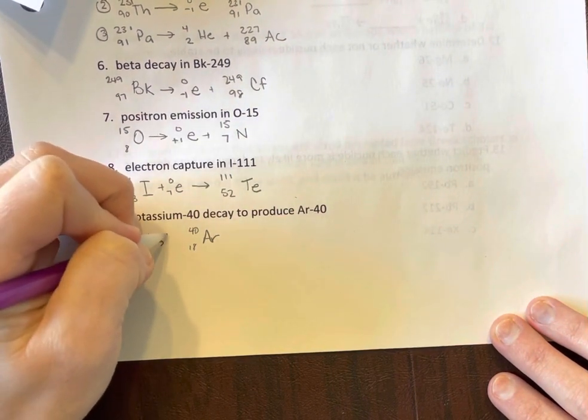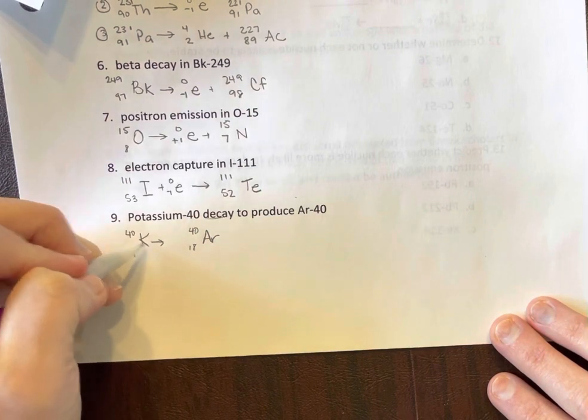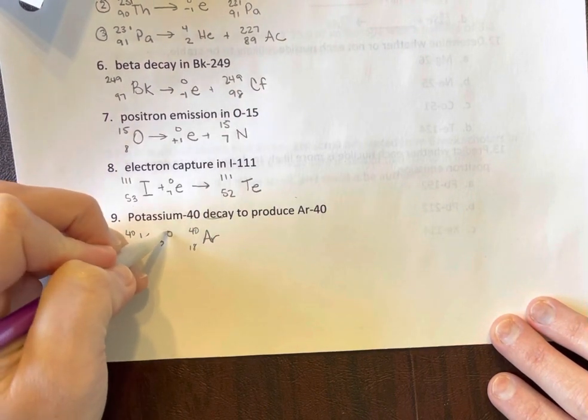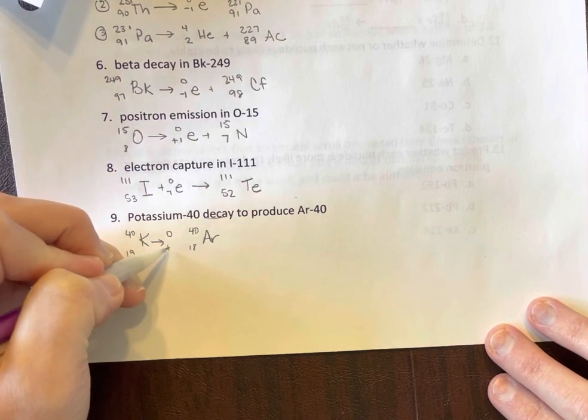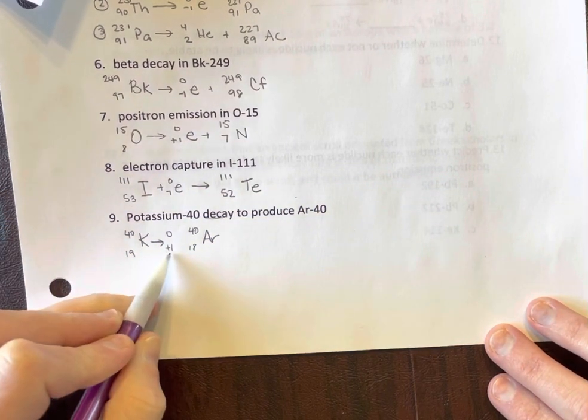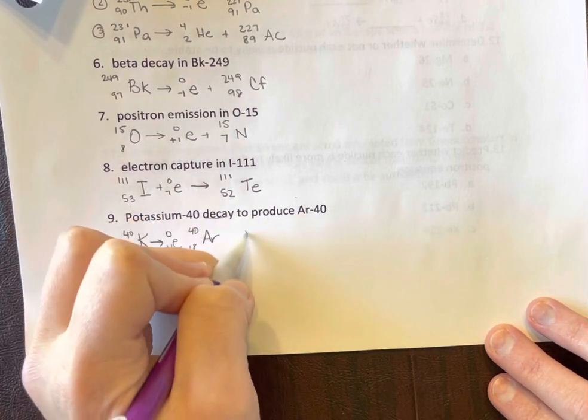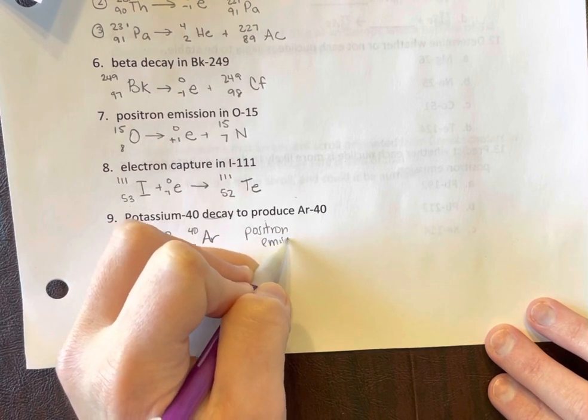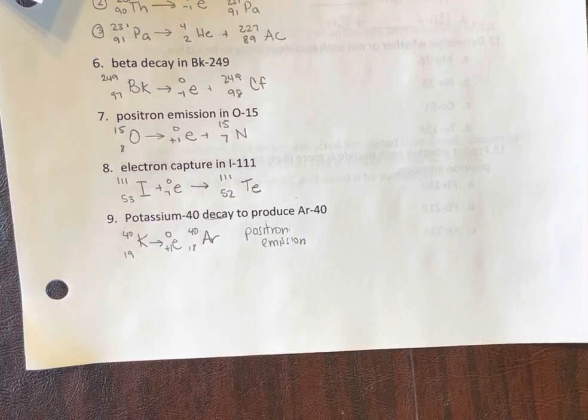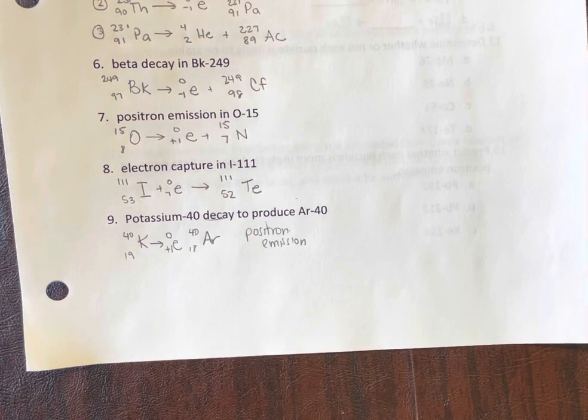Well, there's no change. Because this is decay, we can't use electron capture. So we know this is what we start with. So we know we have no change in mass. And we know our atomic number decreased by one. So that's a positron. So it's just like working a puzzle. Only compared to things we've done the rest of the semester, this is a very simple puzzle.